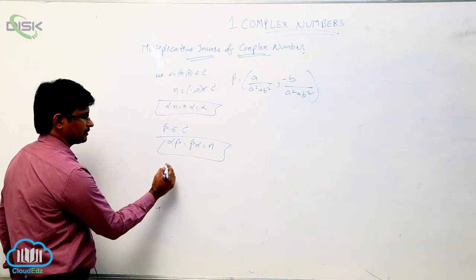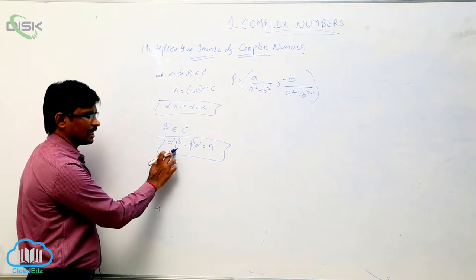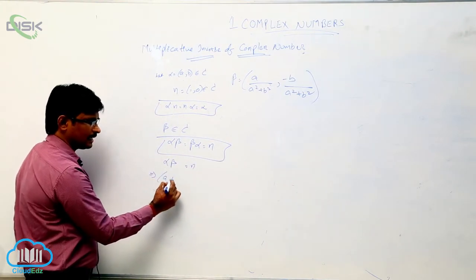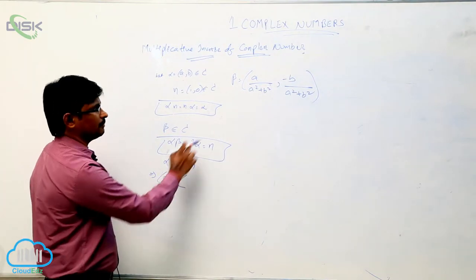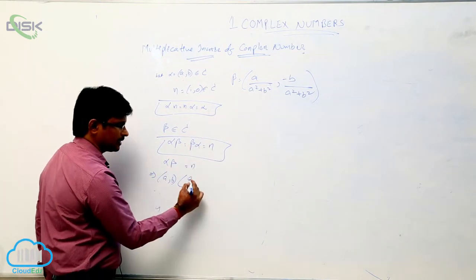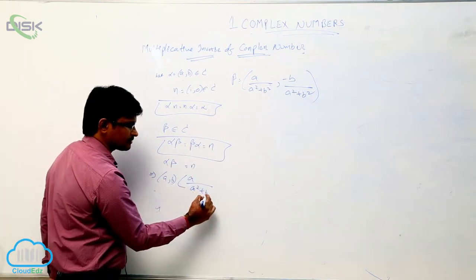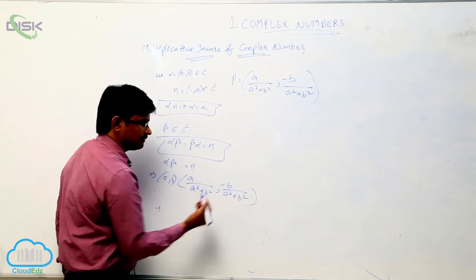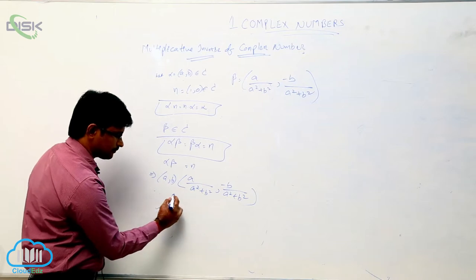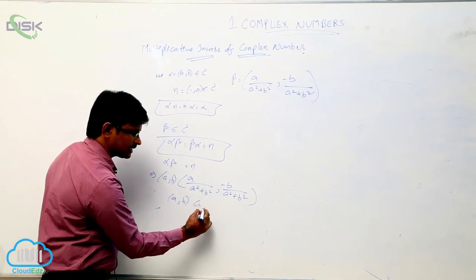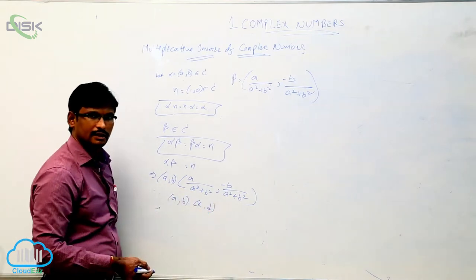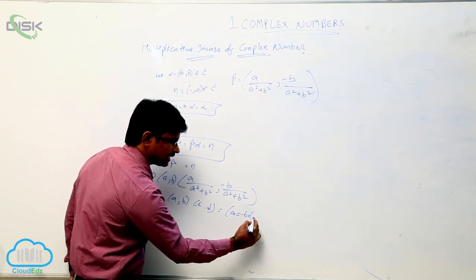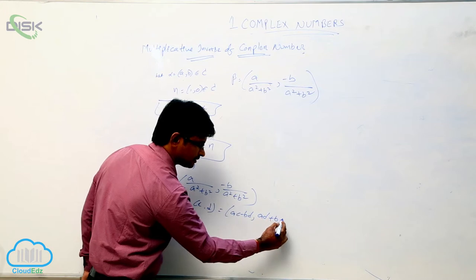We will verify. We need to prove that alpha into beta equal to n. So, what is alpha? It is (a, b). And what is our beta? It is (a/(a² + b²), −b/(a² + b²)), which is in the form of (a, b) into (c, d). And we know that the product of two complex numbers gives us (ac − bd, ad + bc).